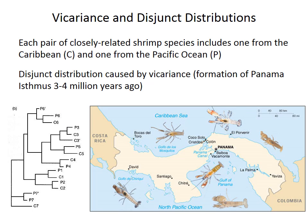Here's an example most likely representing vicariance from modern organisms. This study looked at seven species of shrimp from the Pacific coast of Panama, labeled P1 through P7 on the cladogram, and seven species from the Caribbean side labeled C1 through C7. In all cases on the cladogram, the species pair up — P1 with C1, P2 with C2, C3 with P3, and so forth — called sister species because they are most closely related and share a single common ancestor. This disjunct distribution is best explained by vicariance after formation of the Panama isthmus around three or four million years ago.